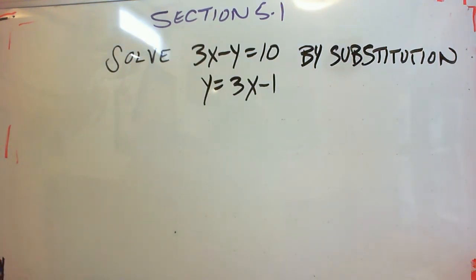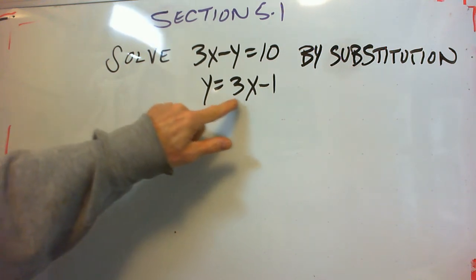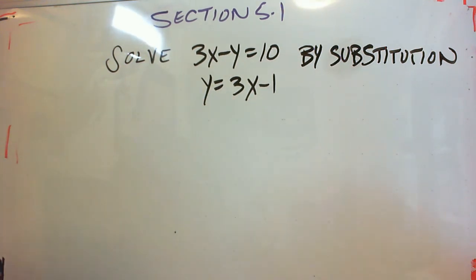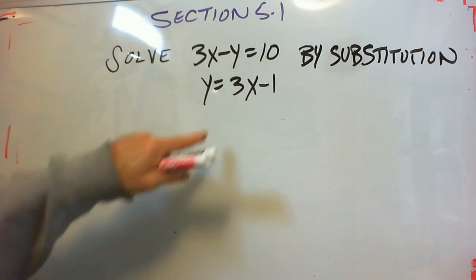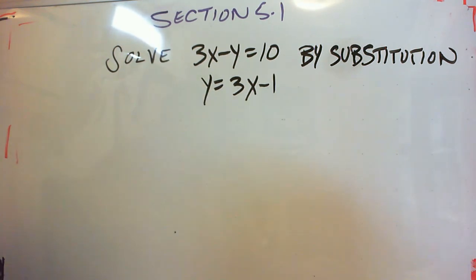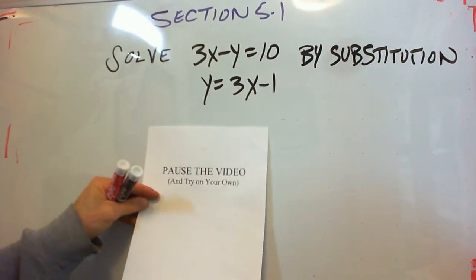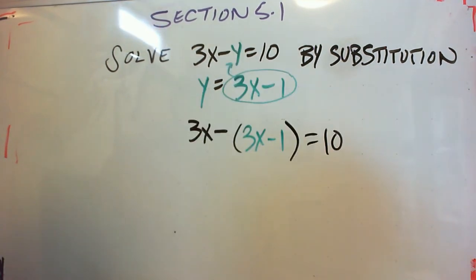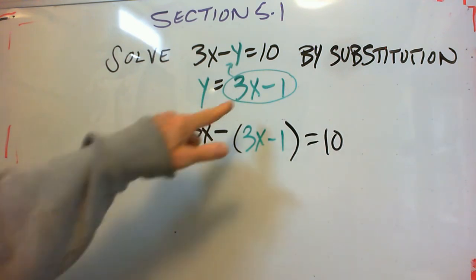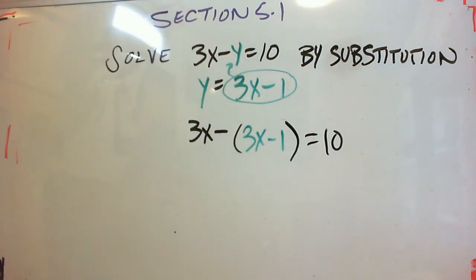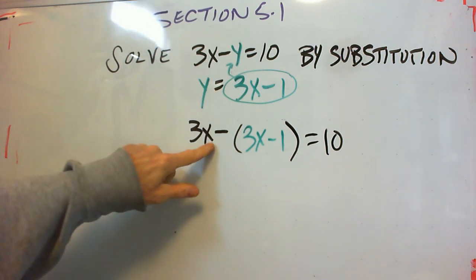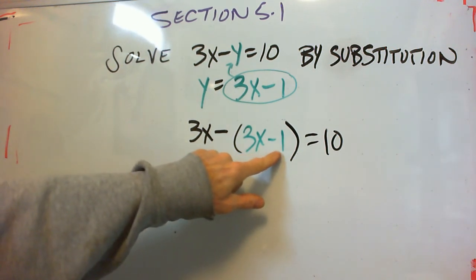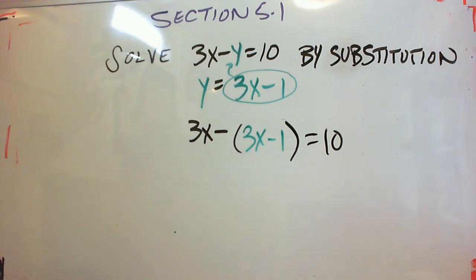One more example for this section. Solve the system 3x minus y equals 10, y equals 3x minus 1. And substitute from one equation into the other. And give this a try. See if you can do this. So we plug that 3x minus 1 into that first equation for y. That gives us 3x minus the quantity 3x minus 1 in parentheses equals 10.